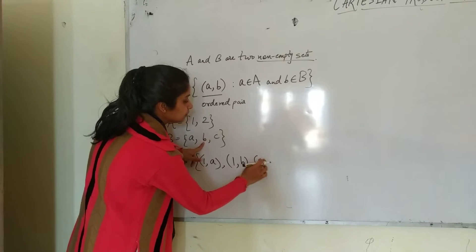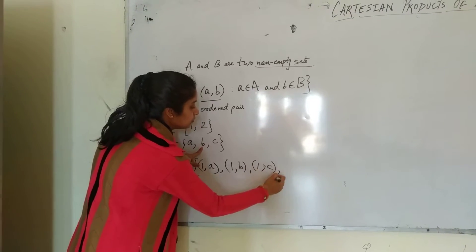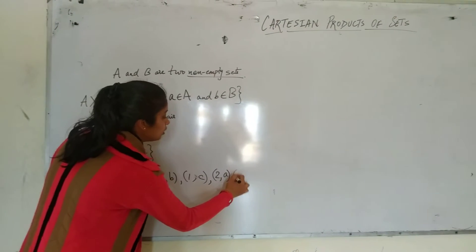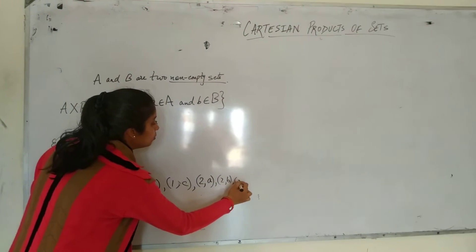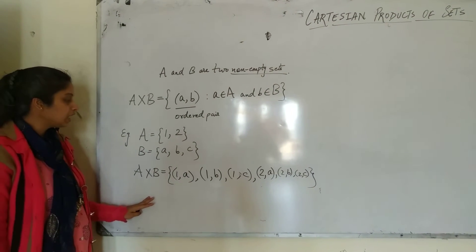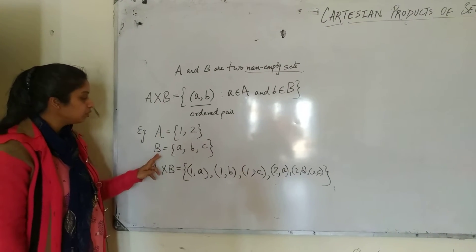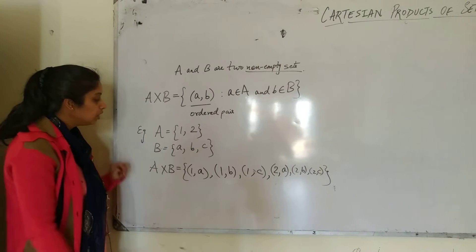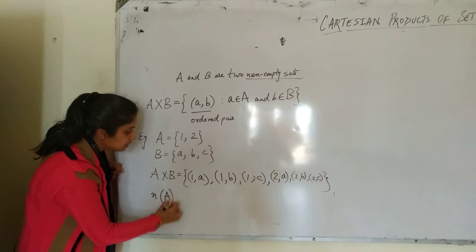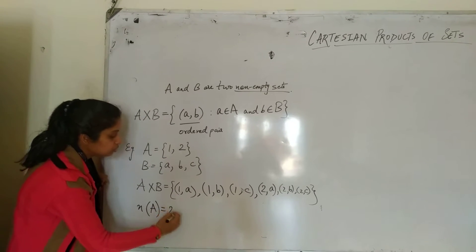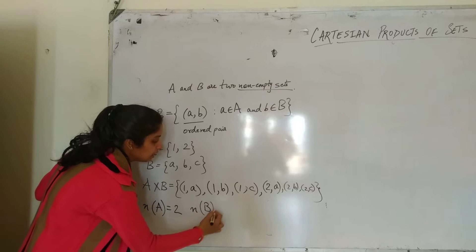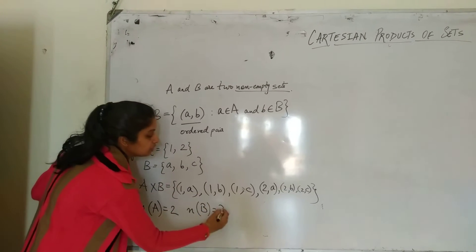Continuing, we also get (1, c). Then we take element 2 from set A and pair it with each element of B: (2, a), (2, b), and (2, c). So this is the complete Cartesian product of A and B, where A is {1, 2} and B is {a, b, c}. We can see the number of elements in set A is 2, and the number of elements in set B is 3.